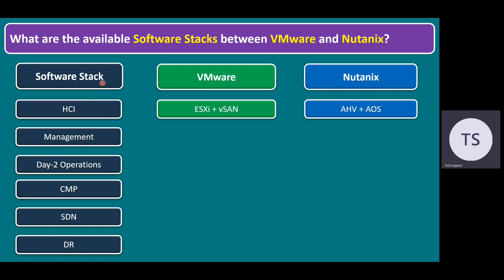Within the software stack, as we're familiar with hyper-converged infrastructure — which means combined server virtualization and storage virtualization — within VMware, the hypervisor product name is ESXi, ElasticSkyX. For HCI, we combine with SDS solutions, software-defined storage, or a storage virtualization solution, which is vSAN (Virtual SAN).